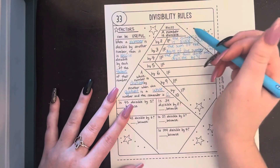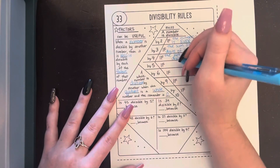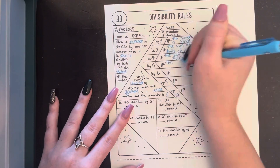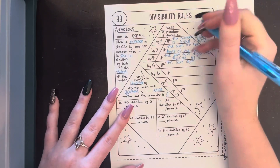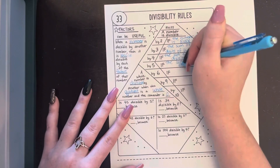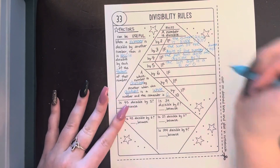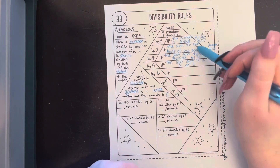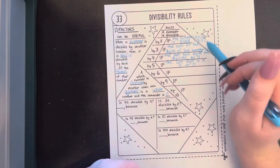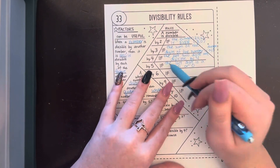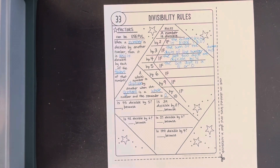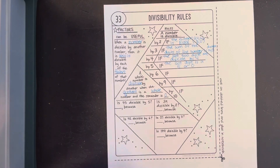A number is divisible by five if the last digit is a 5 or 0. This is similar to our even numbers — if it ends in 5 or 0, it's divisible by 5. This applies regardless of how many digits there are; we're always looking at our last digit.